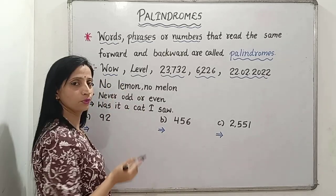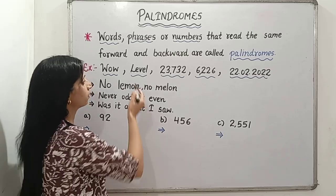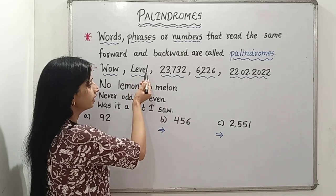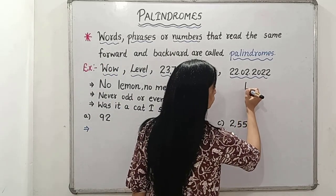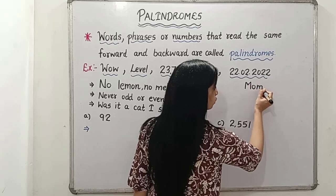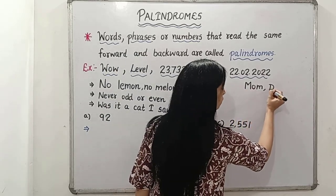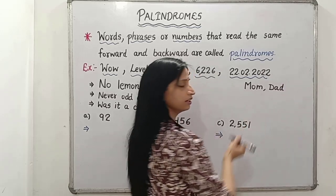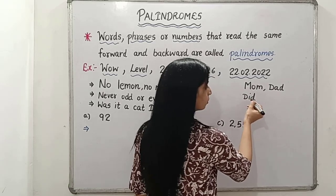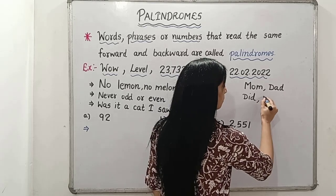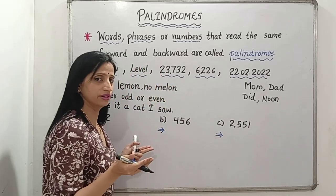For example, the word 'wow.' When we read it W-O-W from backward, the word is again 'wow.' Then 'level' — when we read it L-E-V-E-L, again 'level.' There are many other words as well which you use in your daily life, like 'mom' — this word is also a palindromic word. You can use the word 'dad' — D-A-D, in reverse order also it is 'dad.' Also 'did' — D-I-D — and 'noon.' There are many more examples of these words.